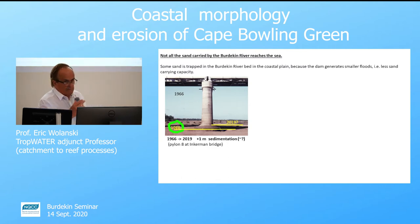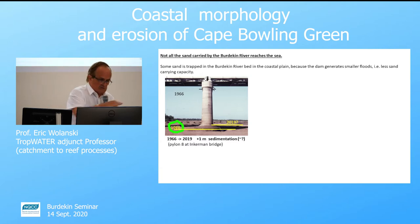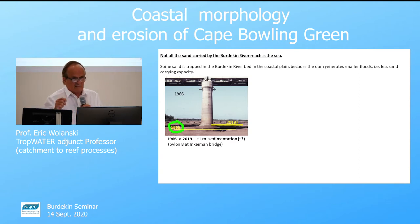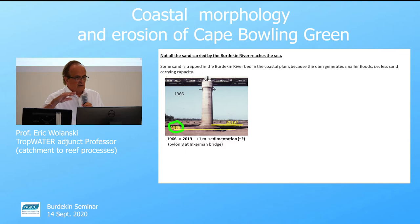Now we talk about the sand. Sand is the coarse particle — it is not carried in suspension in the water, it just hops along the bottom. Not all the sand carried by the river in flood reaches the sea. In the coastal plain, some sand is trapped in the Burdekin river belt because the floods are smaller due to the dam.